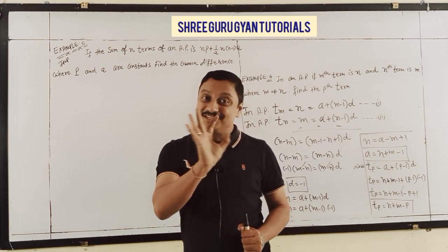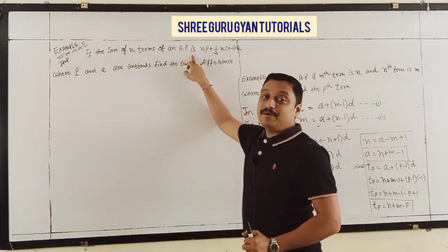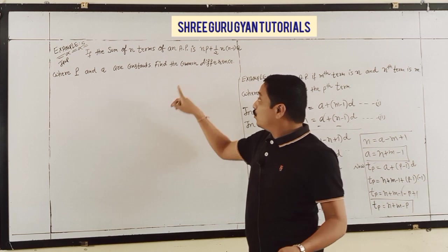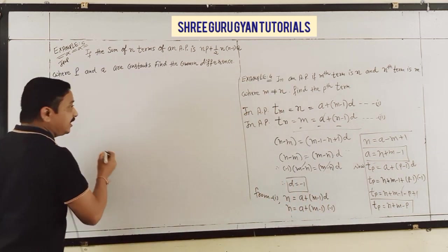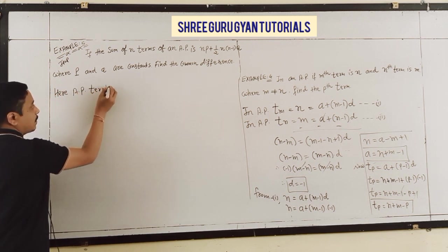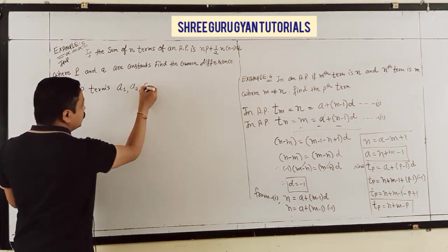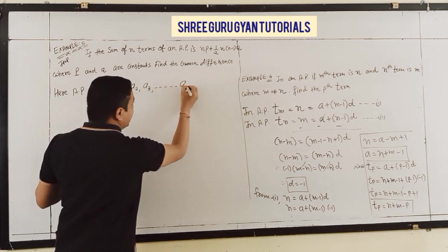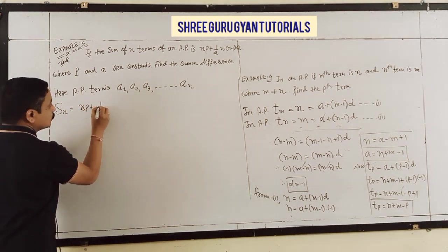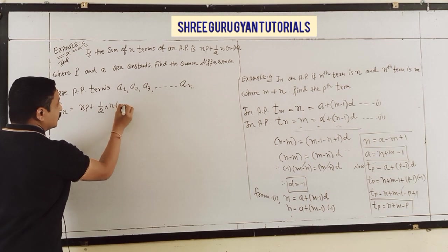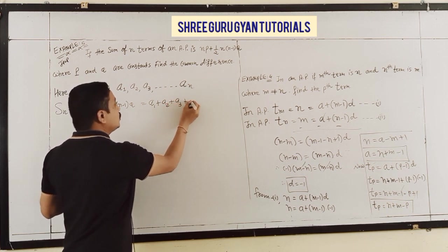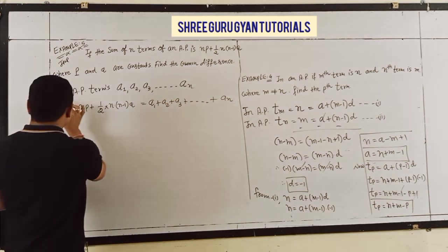Example 5, which is IMP: If the sum of N terms of an AP is Np + (1/2)N(N-1)Q, where P and Q are constants, find the common difference. I take terms A1, A2, A3, ..., AN with SN = Np + (1/2)N(N-1)Q.